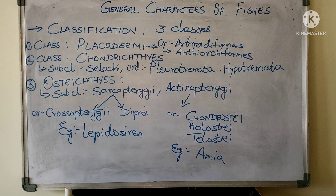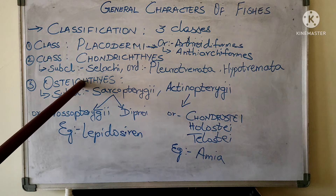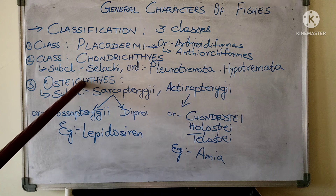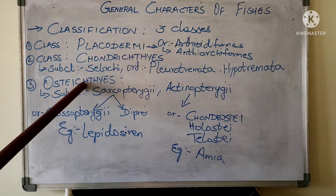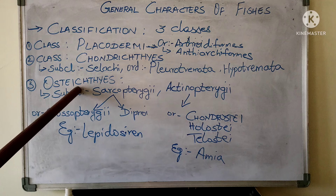Coming to the next class, the third class is Osteichthyes. These are bony fishes and the body skeleton is made up of bones. The body is spindle shaped. These fishes mainly live in marine, freshwater, and brackish waters.